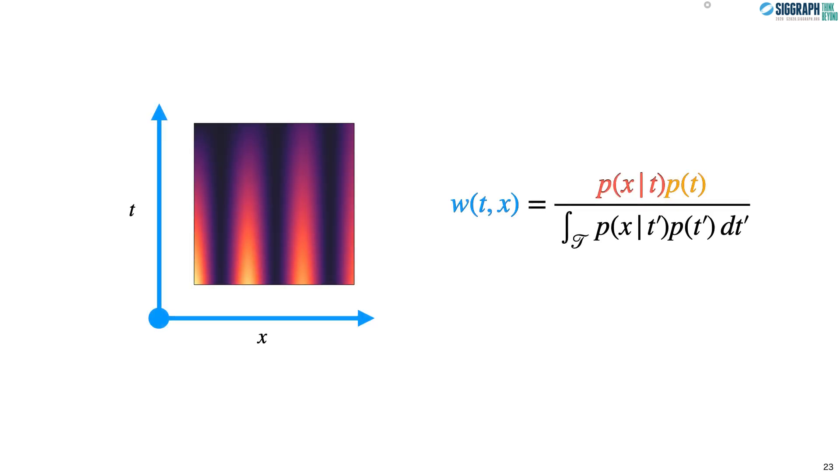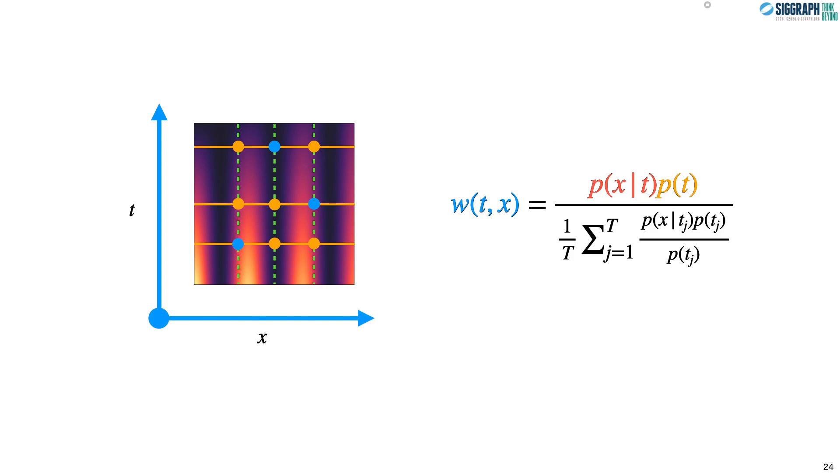Given our joint distribution for some technique sample pair, the CMIS balance heuristic needs us to integrate vertically over the techniques, but this can be very difficult. Instead of directly solving for the integral, we can sample several technique and sample pairs from the joint distribution and can use the techniques of each pair to make Monte Carlo estimates of their weights. As each technique is drawn proportional to its marginal, the estimator in the denominator simplifies to just an average of the conditional sample densities, which in most applications is readily available.